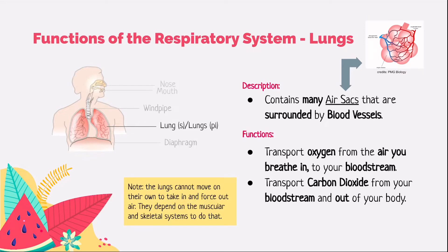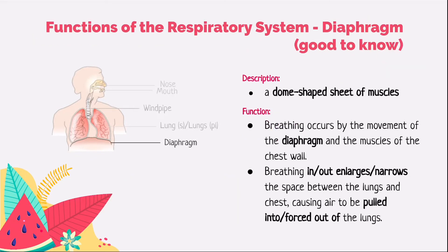And this brings us to the diaphragm. The diaphragm is a dome-shaped sheet of muscles that moves along with the muscles of the chest wall for you to breathe. Breathing in or out enlarges or narrows the space between the lungs and the chest, causing air to be drawn into or forced out of the lungs. Note that the diaphragm is not in your syllabus at this moment, but knowing about it can help you understand how breathing works better.